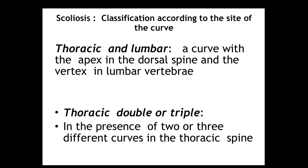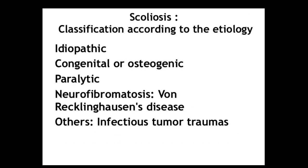We can also have combinations such as thoracolumbar, where the apex is in both the dorsal and lumbar spine, or thoracic double or triple curves, meaning the presence of two or three different curves in the thoracic spine. Regarding etiology, idiopathic scoliosis represents over 60% of cases. Others include congenital, paralytic, neurofibromatosis (von Recklinghausen's disease), infections, tumors, and traumas.